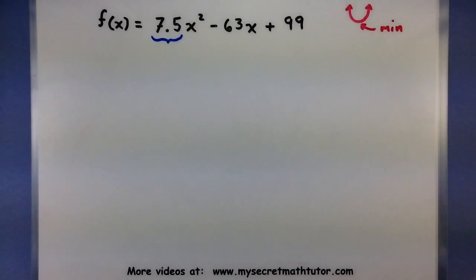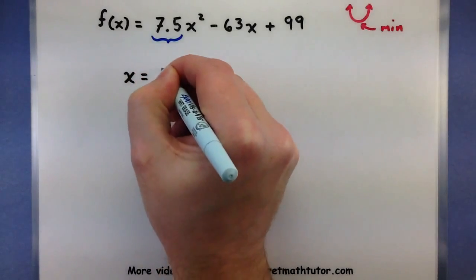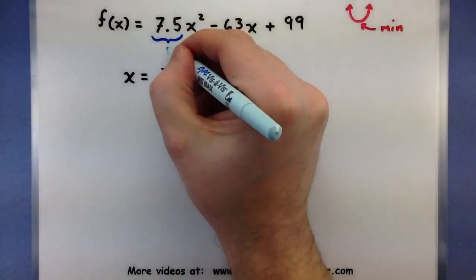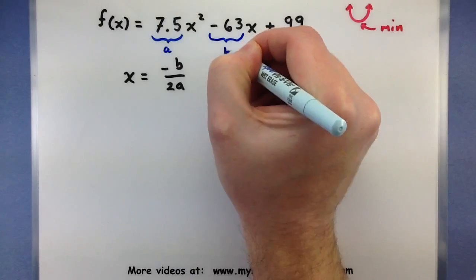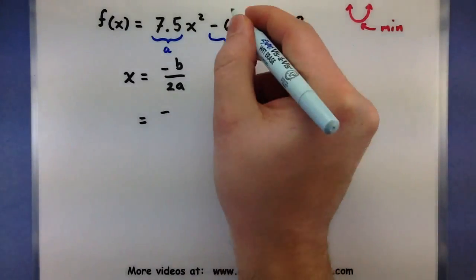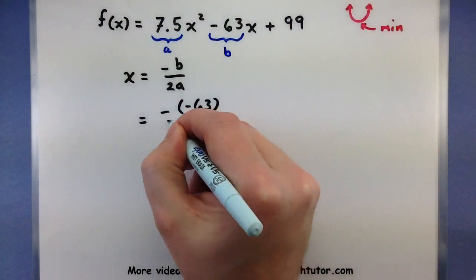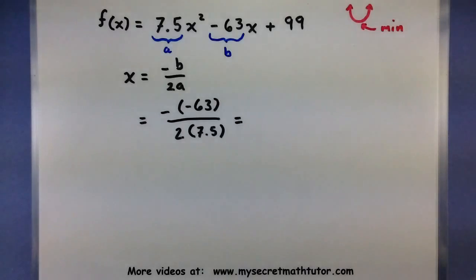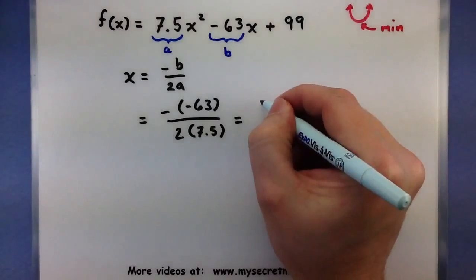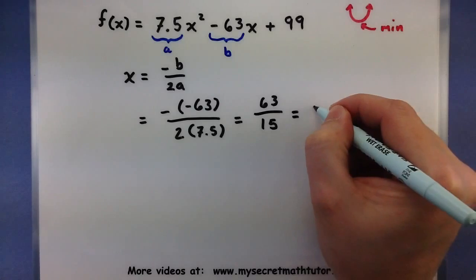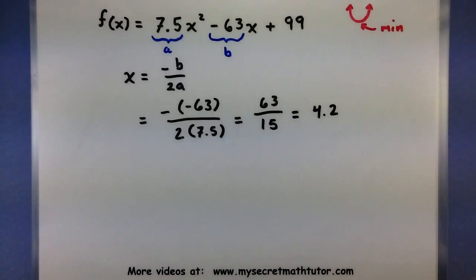This is where the formula comes into play. I know the minimum will occur at x equals negative b all over 2a. I'm going to use 7.5 for the 'a' value and the coefficient in front of x for the 'b' value. So x equals negative of negative 63, all over 2 times 7.5. A negative times a negative gives positive 63, and 2 times 7.5 is 15, so this simplifies to 4.2. Be careful — that 4.2 is not the minimum itself; this is where the minimum occurs.